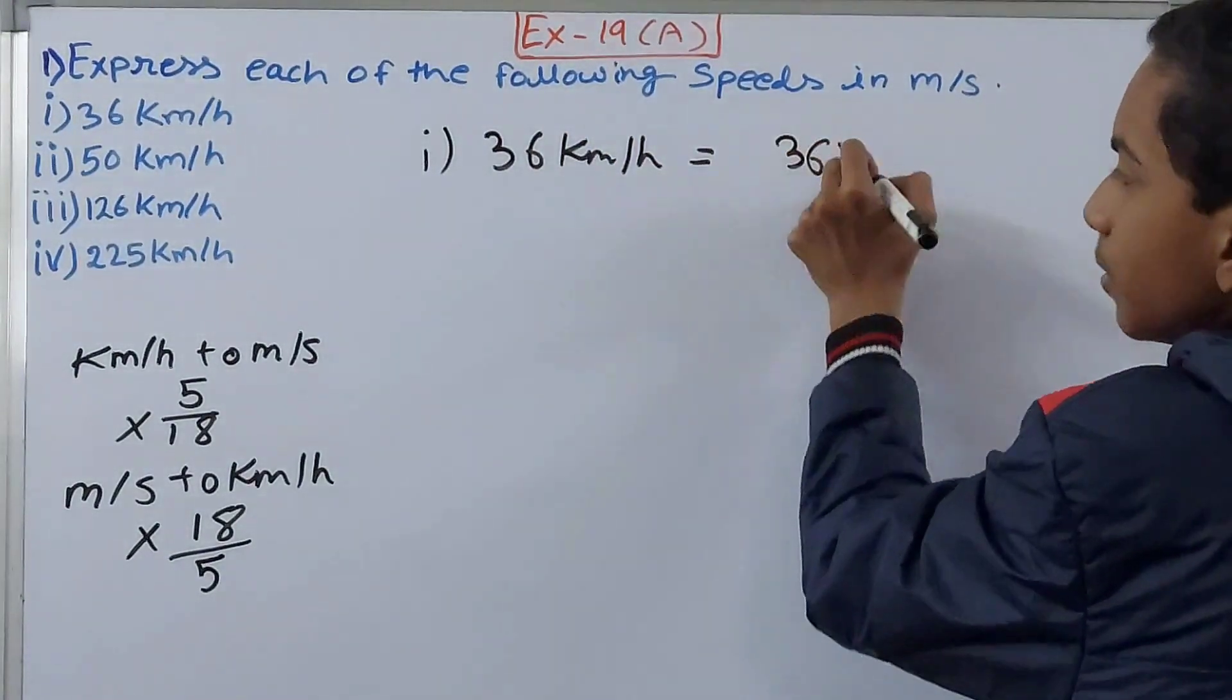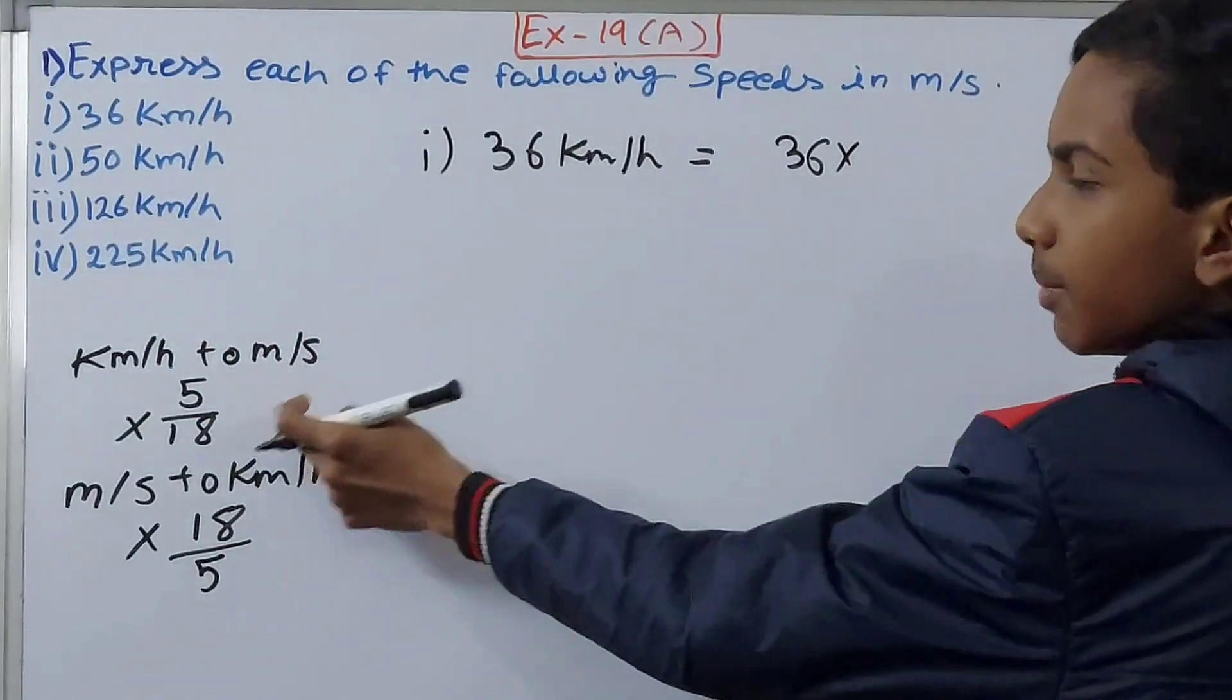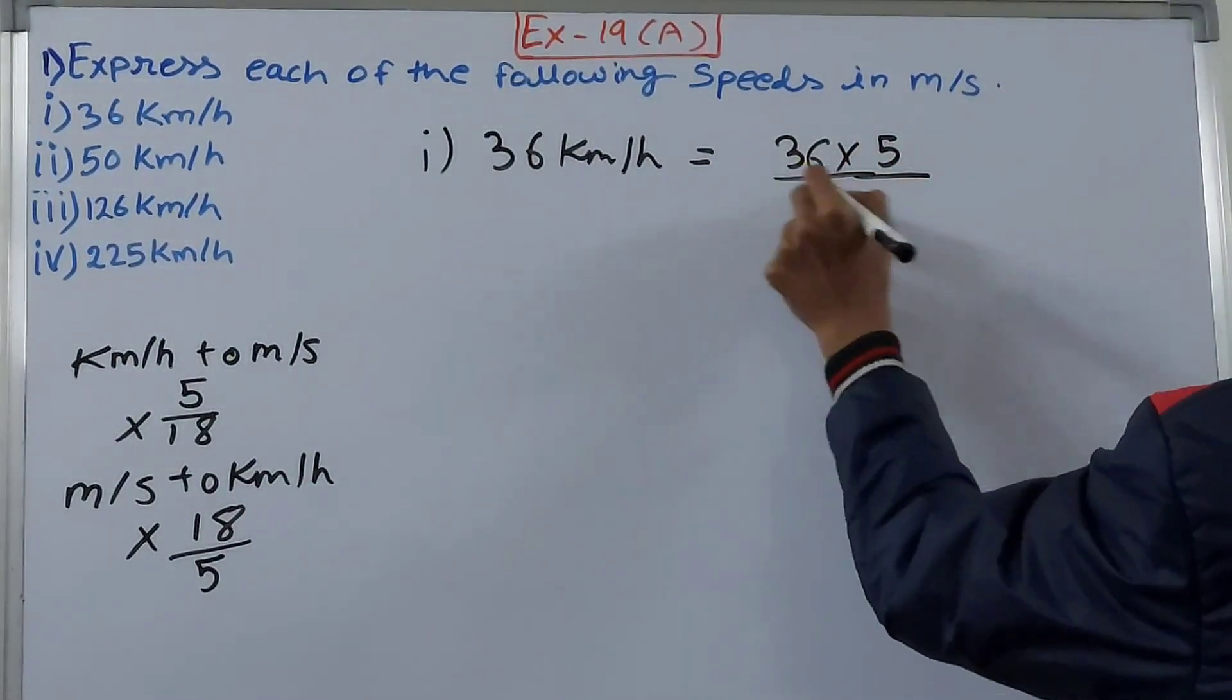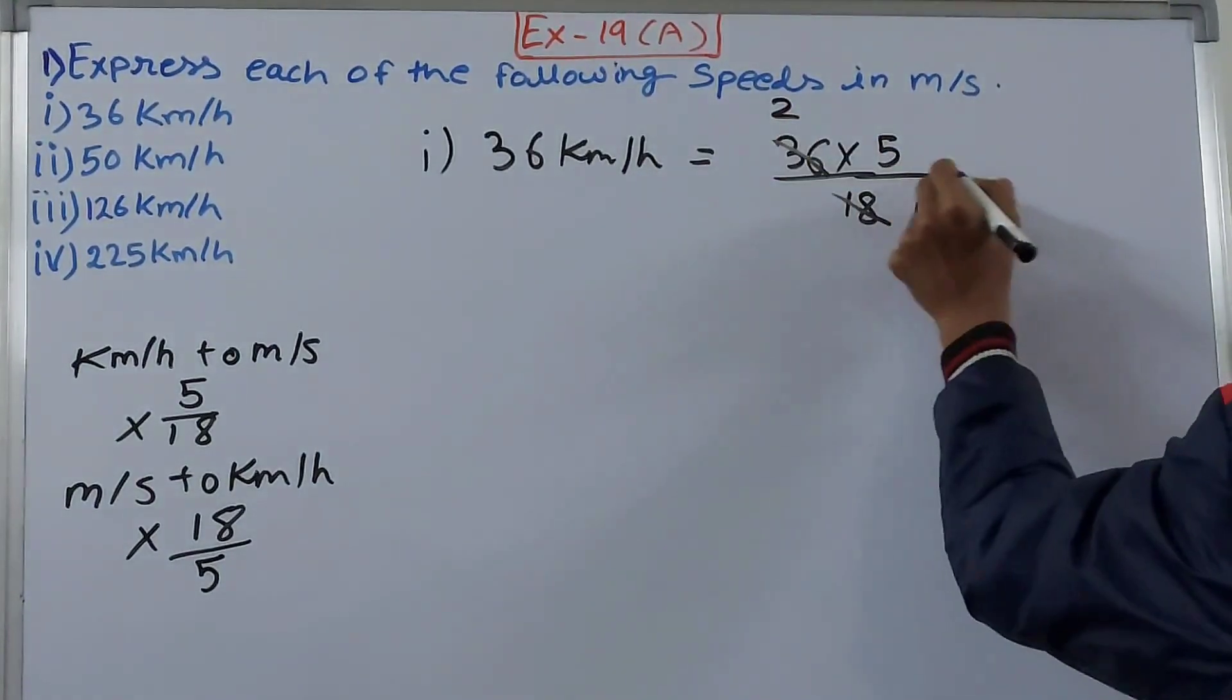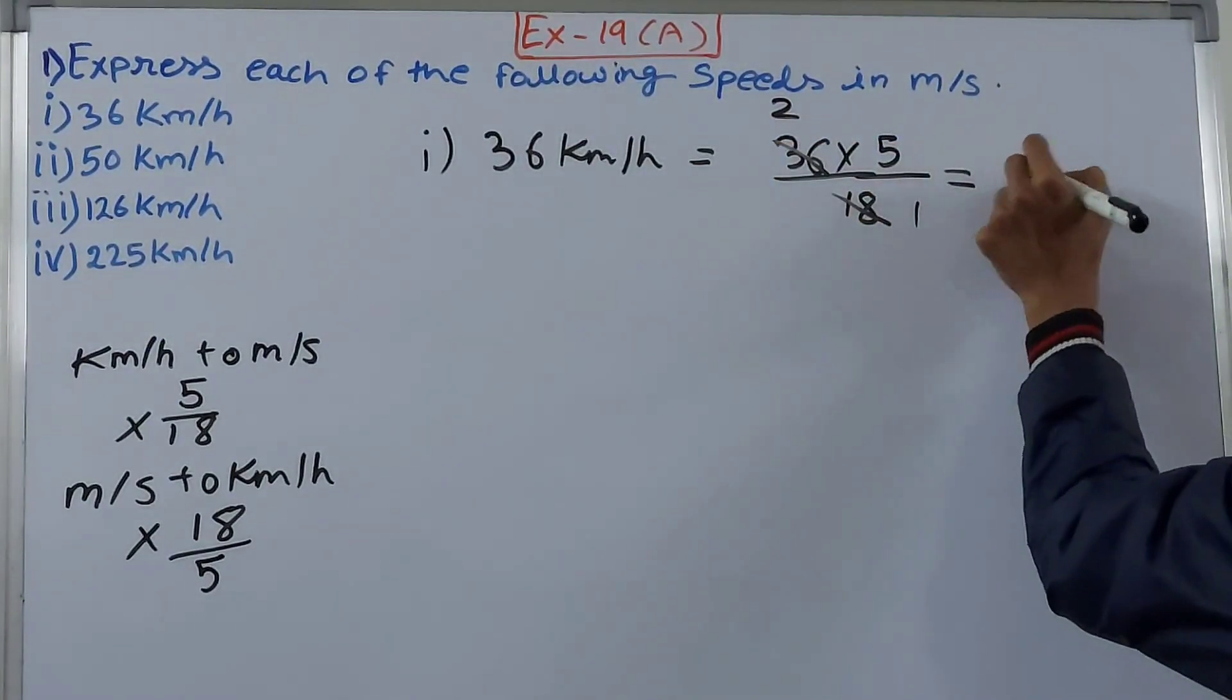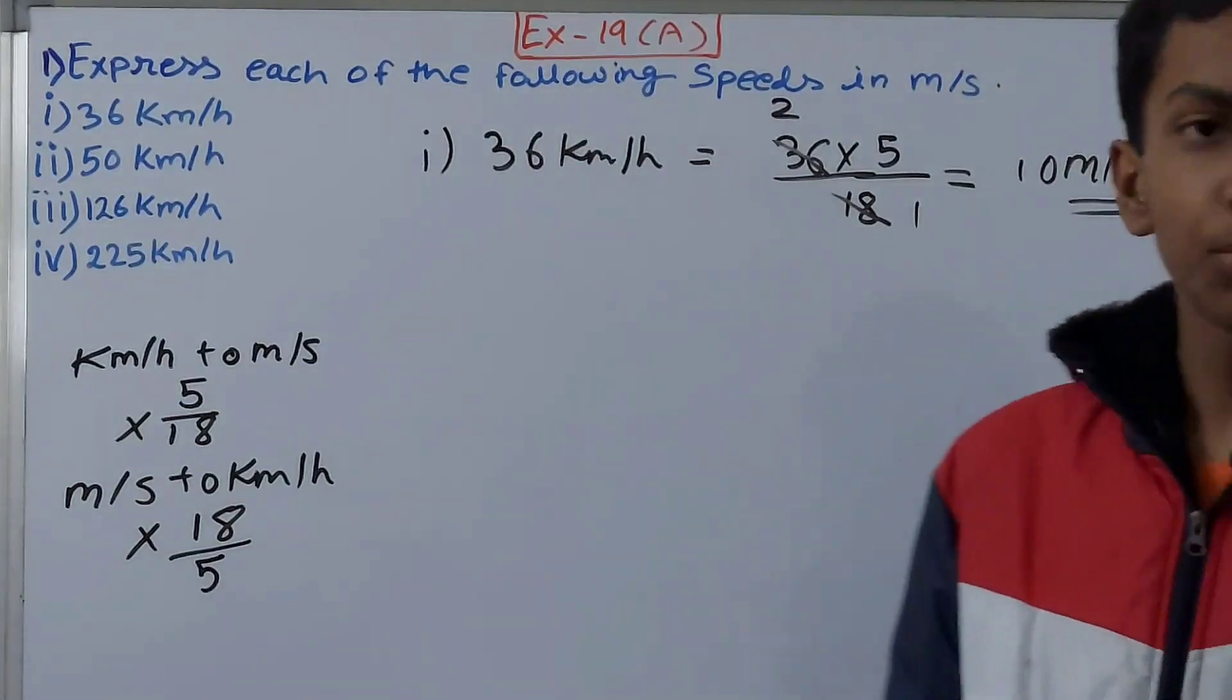First we've got 36 kilometers per hour. From kilometer per hour to meter per second, multiply by 5 by 18. So 36 into 5 by 18, cancel this, 2 into 5 that becomes 10 meter per second. This becomes the answer, it's quite simple.